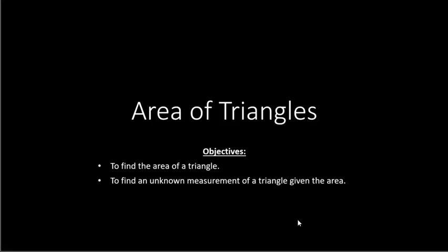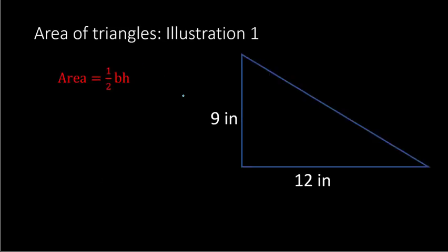In this video, you will learn to find the area of a triangle, and to find an unknown measurement of a triangle given the area. To understand our triangle formula, you have to realize that a triangle is basically half of a parallelogram. Our parallelogram formula was area equals base times height, so for a triangle it's half of that: the formula is 1 half times the base times the height, or area equals 1/2 × base × height.